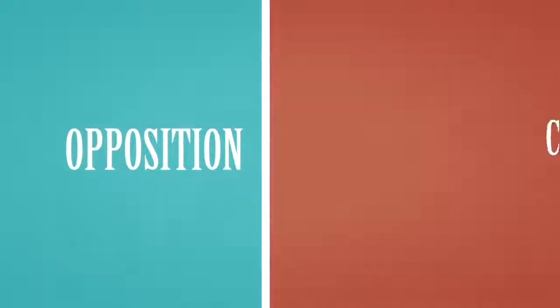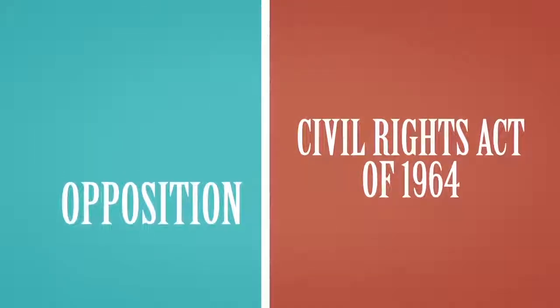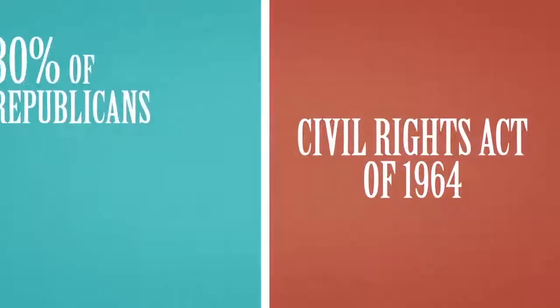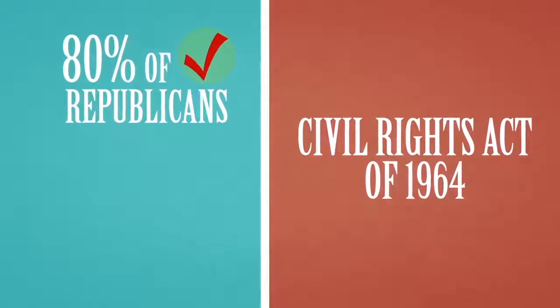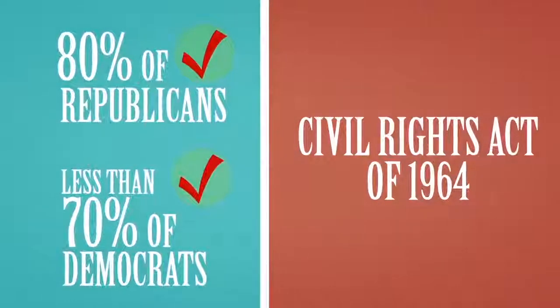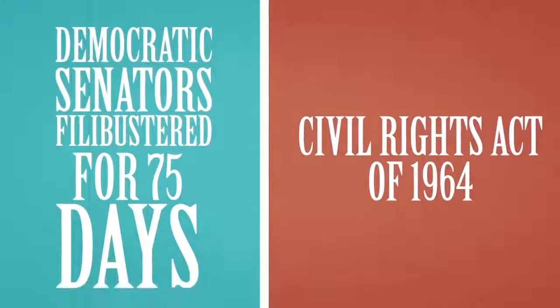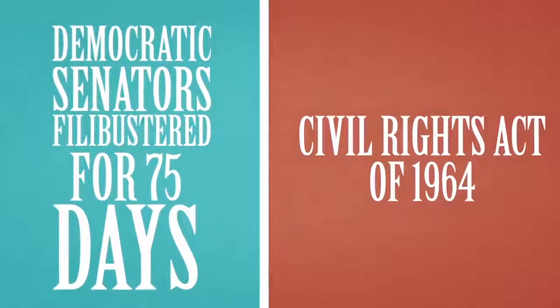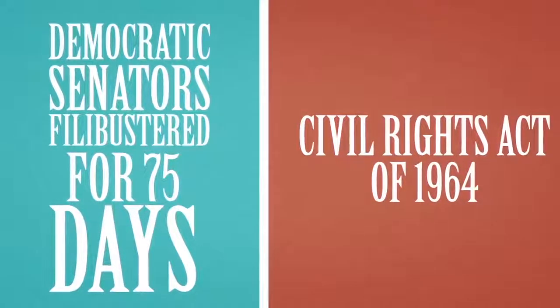A few decades later, the only serious congressional opposition to the landmark Civil Rights Act of 1964 came from Democrats. 80% of Republicans in Congress supported the bill. Less than 70% of Democrats did. Democratic senators filibustered the bill for 75 days until the Republicans mustered the few extra votes needed to break the logjam.